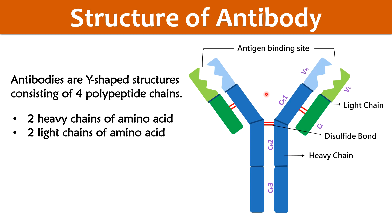One antibody has two antigen binding sites present between the heavy chain and light chain in the variable region of the antibody. The variable region of the antibody decides to which antigen the antibody will react, whereas the constant region of the antibody decides to which cell surface the antibody will bind.